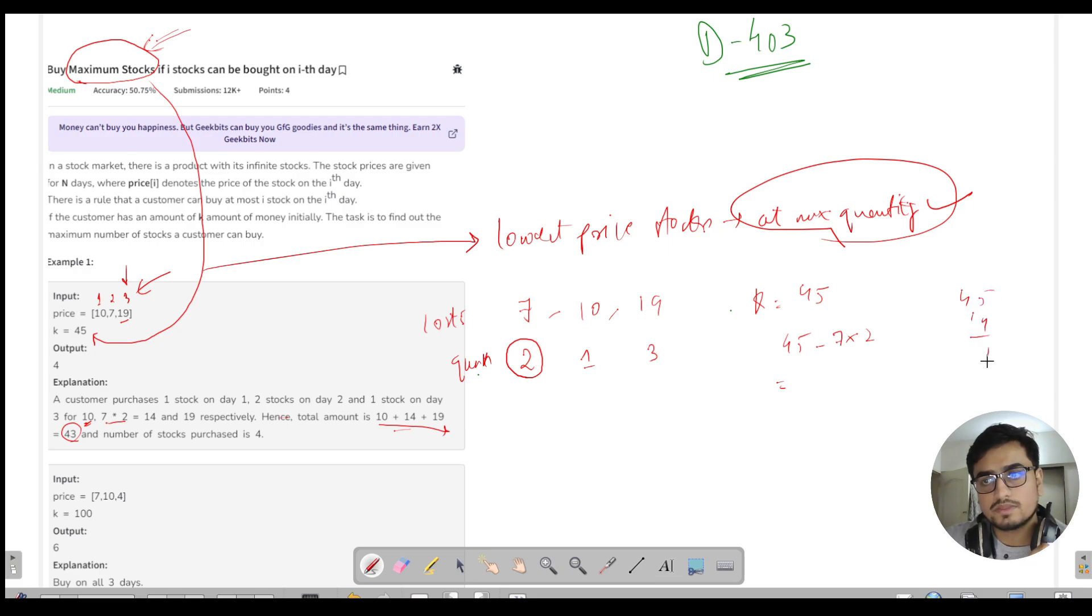45 minus 14 gives 31 remaining. You can see that for this stock I can buy at max 1, but given I have 31, if this threshold wasn't given I could have purchased 2 quantities for this stock price. So we need to decide how many units of stock we can get.